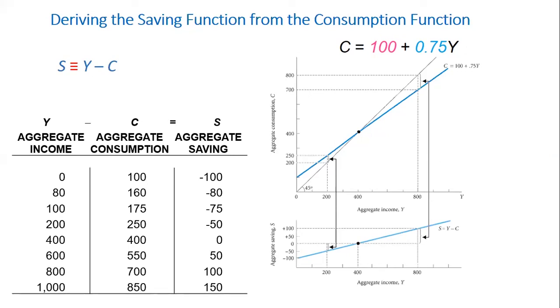So in order to derive the saving function, we start from S equals Y minus C and we replace C by its equation. So S equals Y minus 100 plus 0.75Y, which is the consumption function. So it will lead us to the saving function, which is S equals minus 100 plus 0.25Y. And also, if we want to do it in a different way, we can take two points for the saving and we can have the equation of the line.